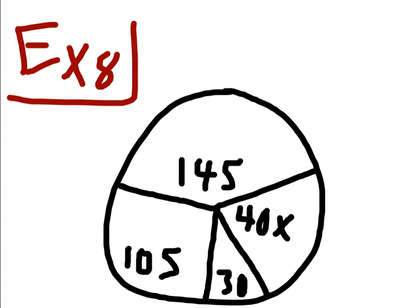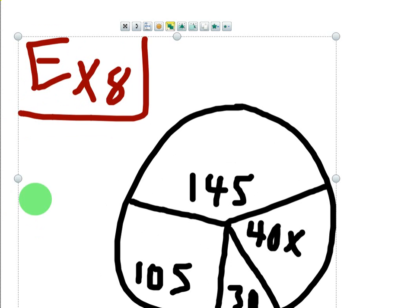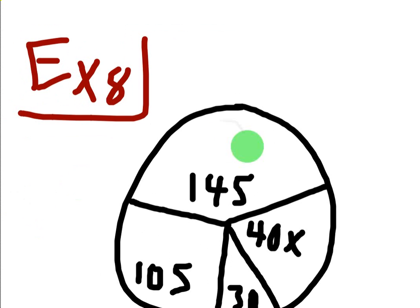All you need to do is add these angles up to equal 360. We know the angles of a circle add up to 360, so we're going to take all of this stuff, every single angle. So this one's 145, this is 105, 30, 40x. We're going to add them up to equal 360. Does everybody understand that?